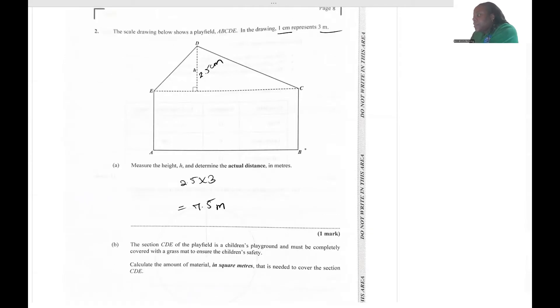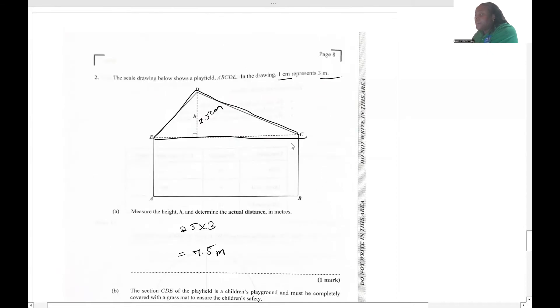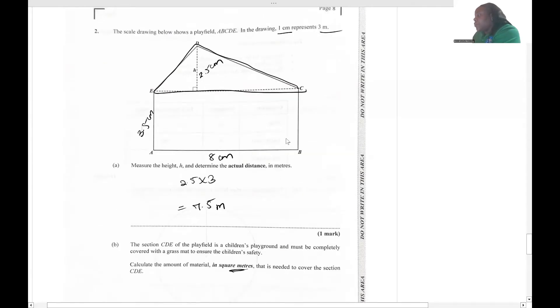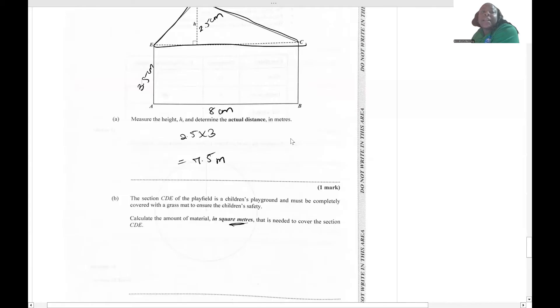The section CDE of the playfield is a children's playground - that's the shear angle here. What is the amount of material in square meters? Pay attention to the bolded parts of the question. When I did my measurements, I got here as 8 centimeters and E as 3.5 centimeters.